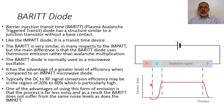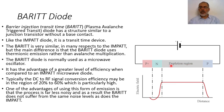The construction of the BARITT diode, as we see here, is a P+ N junction, and this N junction is followed by a depletion region — a long depletion region. This long depletion region is the transit time region, and this connects to the P electrode.